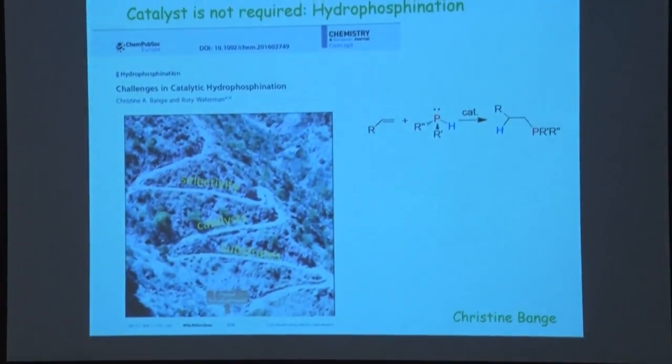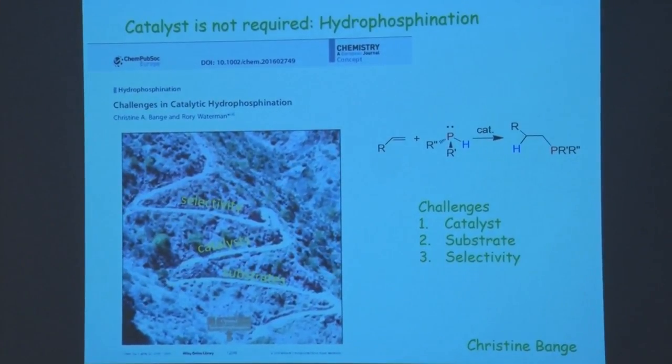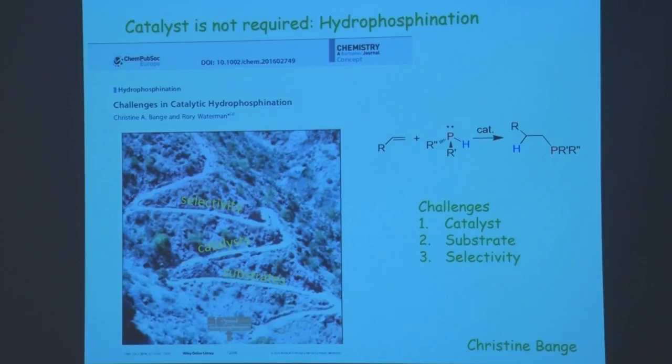This transformation has been under investigation for about 25-30 years — a relatively new transformation. Christine, a current PhD student, and I sat down and thought about what's useful, what's not, and what the challenges are in metal-catalyzed hydrophosphonation. We wrote an article earlier this year identifying three challenges: the identity of the catalyst, the substrate scope for both the phosphorus and the unsaturated system, and the selectivity — whether you're making the kinds of things you want.